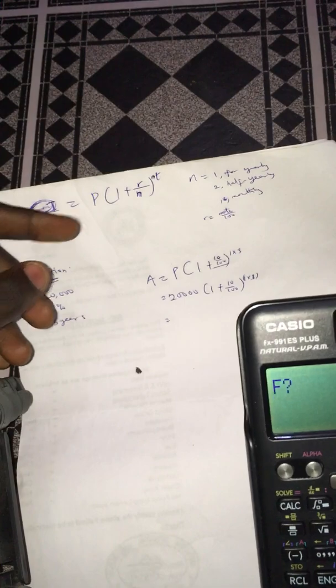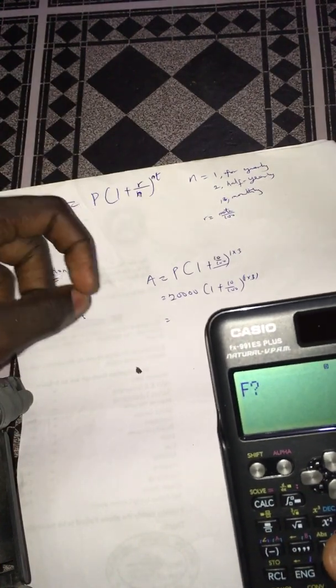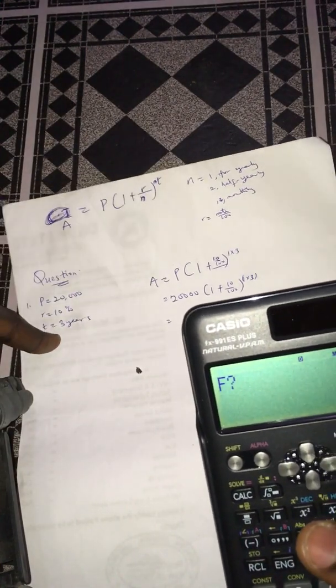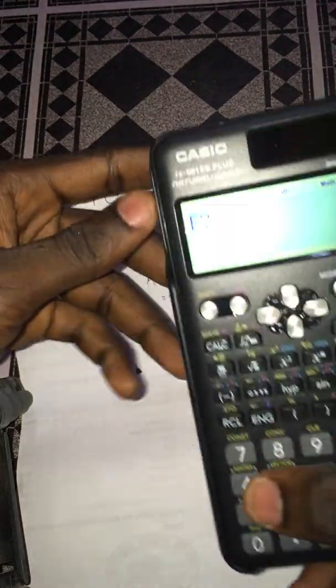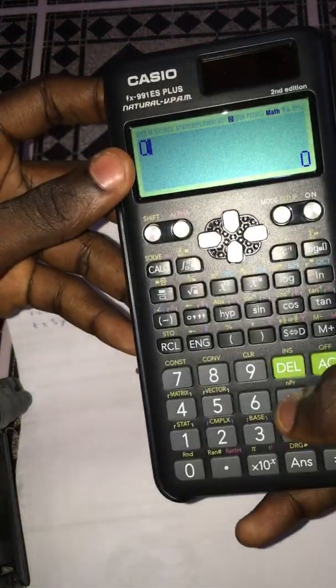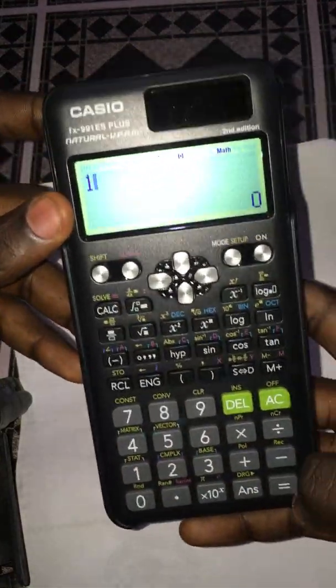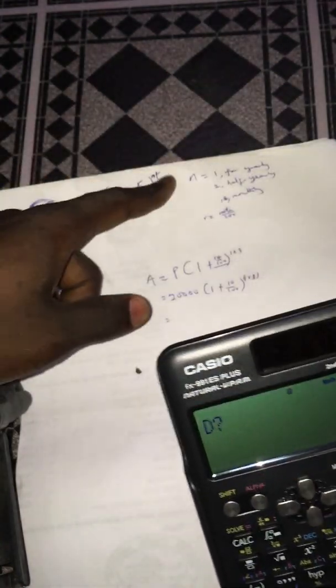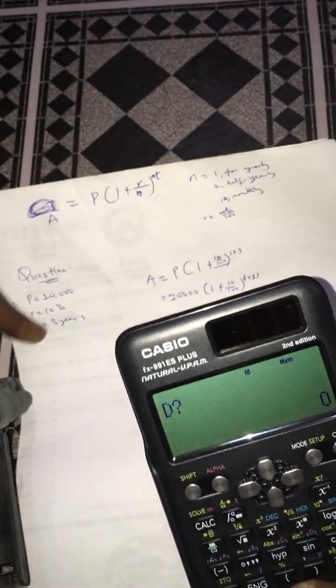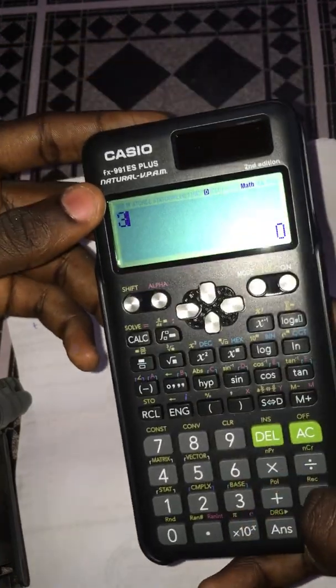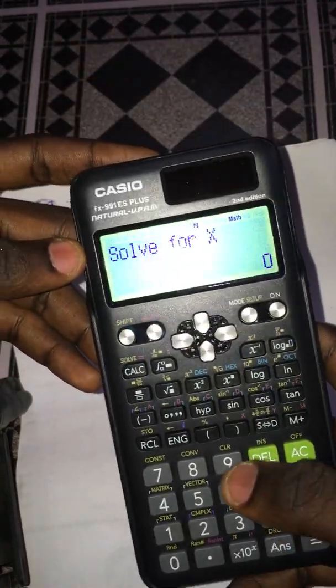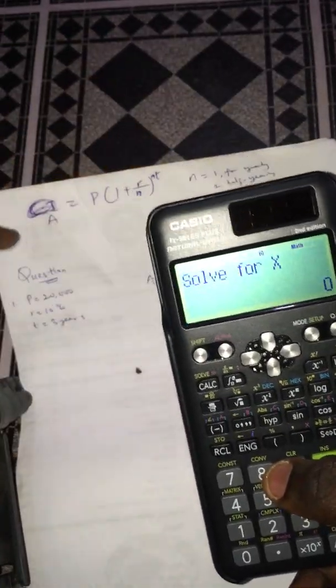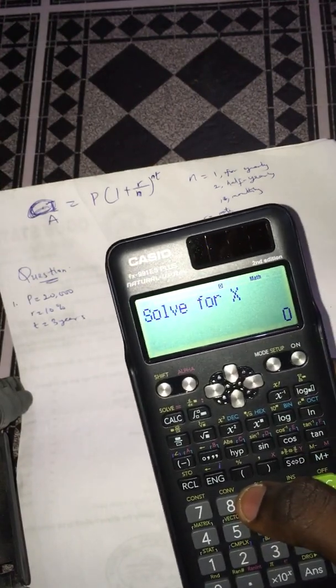Our F is the n. Since we're solving for yearly, our n equals 1, so we have F equals 1. Then our D is t, which is 3 years, so we have 3. When we press equals to, now you can see we have to solve for X, which is our A. Now you understand the reason why A wasn't taken in the first place.